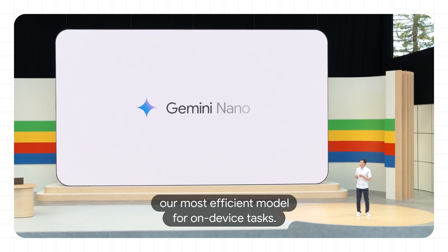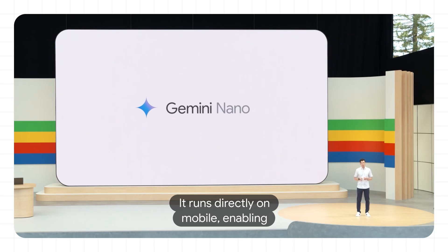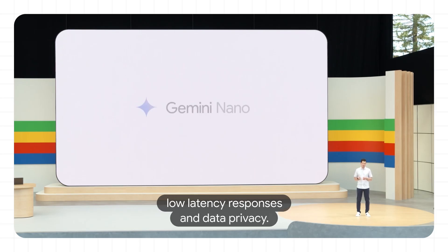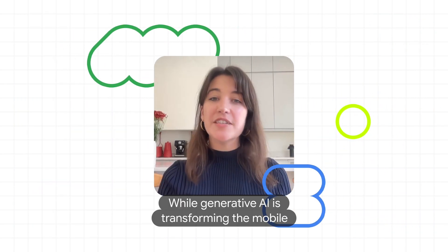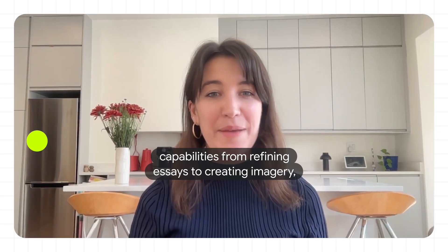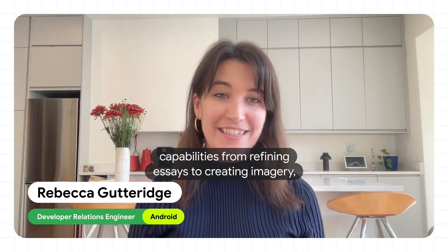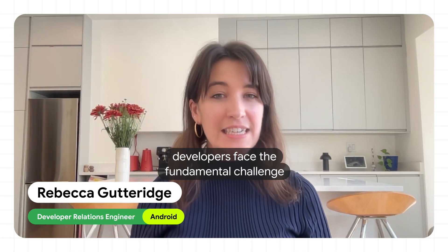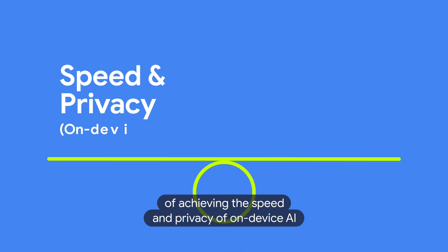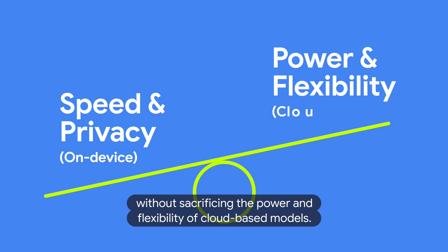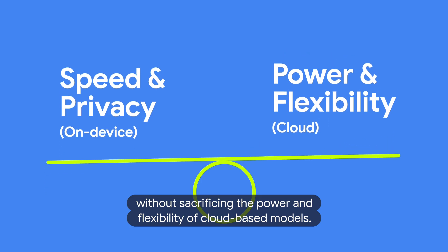Let's look at Gemini Nano, our most efficient model for on-device tasks. It runs directly on mobile, enabling low-latency responses and data privacy. While generative AI is transforming mobile capabilities — from refining essays to creating imagery — developers face the fundamental challenge of achieving the speed and privacy of on-device AI without sacrificing the power and flexibility of cloud-based models.